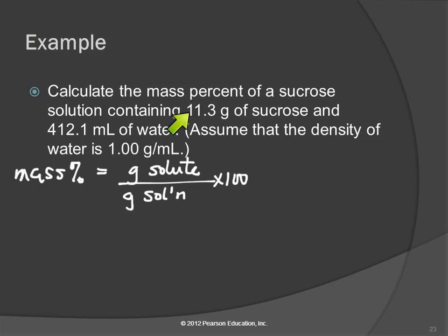Here they've given us the mass of the solute. It's a sucrose solution dissolved in water. So we can plug that in. We've got 11.3 grams in the numerator. What's the mass of the solution? Well, the solution includes the sucrose and the water. They gave us a volume of water, the stinkers.